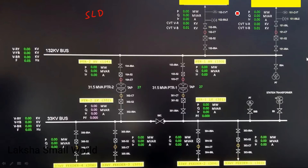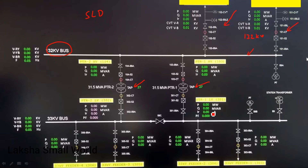These two are the 132 kV incoming lines connected to the 132 kV bus. From the bus, the power transformer steps down the voltage level to 33 kV. This is the 33 kV bus, and from here these are all the outgoing 33 kV feeders. Since this substation is not currently charged, all readings are at zero.